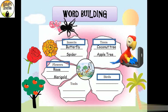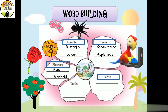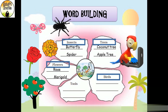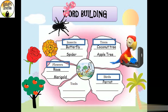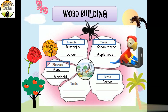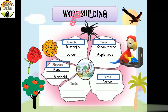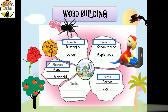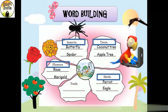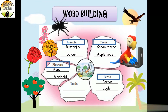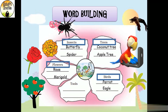Now let's talk about birds. This one is a parrot — P-A-R-R-O-T, parrot. And this is an eagle — E-A-G-L-E, eagle. You can write other birds' names too, like sparrow, pigeon, crow, peacock, hornbill, flamingo, etc.